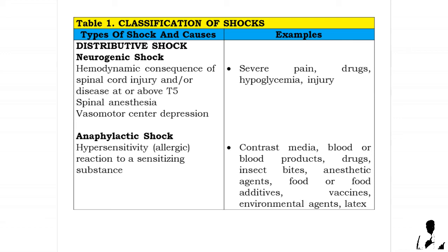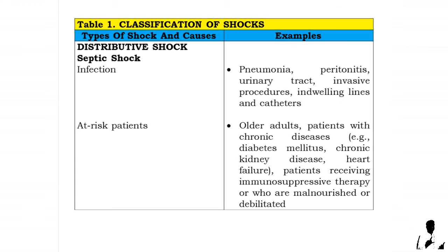Anaphylactic shock causes: hypersensitivity or allergic reaction to a sensitizing substance, for example contrast media, blood or blood products, drugs, insect bites, anesthetic agents, food or food additives, vaccines, environmental agents, and latex.